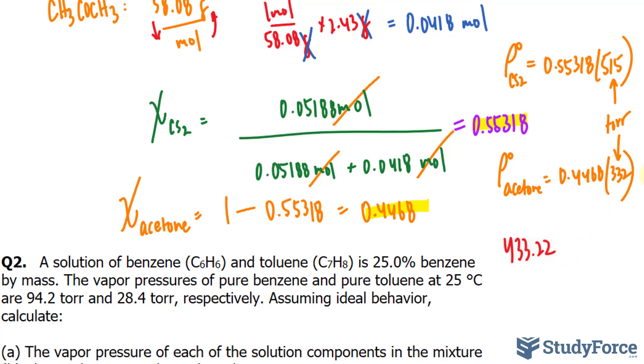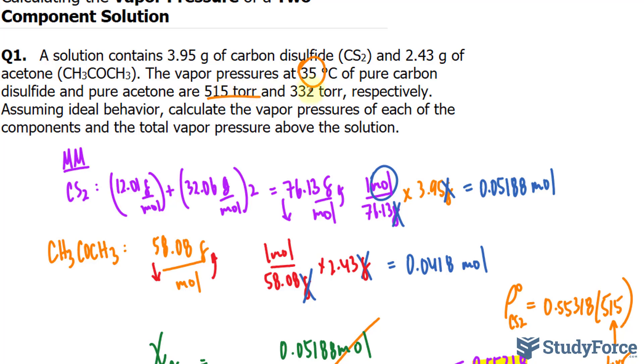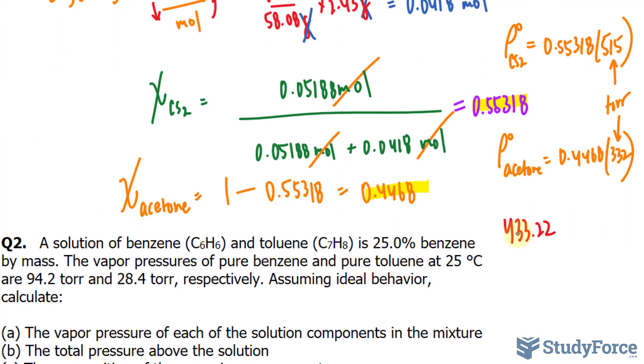433.22. Considering significant figures, we have 3, 3, 3, and 3, and over here is 2, but that's an exact number, so we don't care about it. We should stop writing after this 3, so these are discarded. Our final answer is 433 torr.